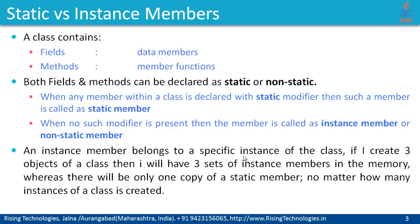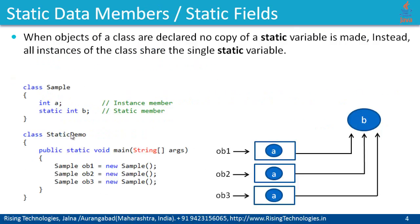A non-static member or instance member belongs to a specific instance of the class. That means if I create three instances of a class, I will have three sets of instance members in memory. Whereas there will be only one copy of the static member, no matter how many instances of a class I declare. Look at this simple piece of program — I have a sample class with two fields, one declared with a static modifier, so this is the static data member, and this is the instance field.